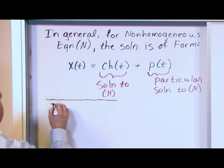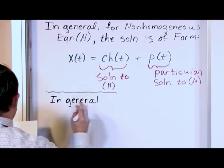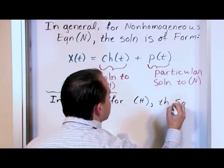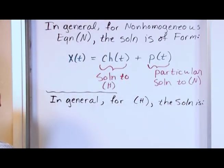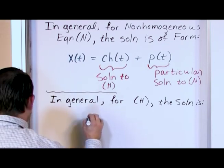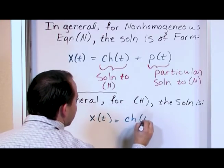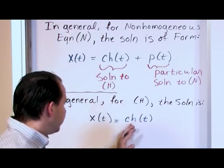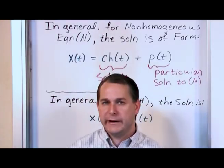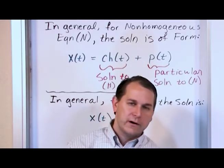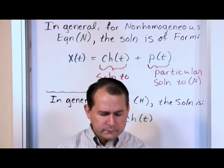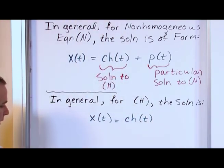Now, for the homogeneous version specifically, if it's truly homogeneous, then x(t) equals CH(t), which means constant₁ times h₁(t) plus constant₂ times h₂(t) plus constant₃ times h₃(t), and so on. How many of these terms you have depends on the number of derivatives in your differential equation. A third-order equation has a third derivative and will have three of these terms; a second-order has two. Let me give you a quick example to refresh your memory.